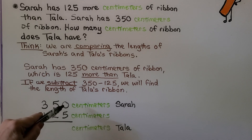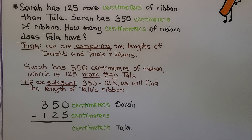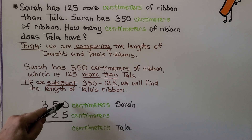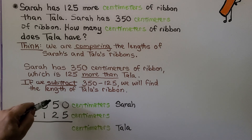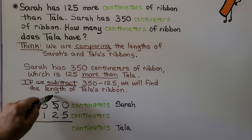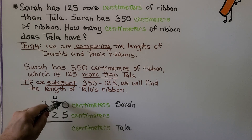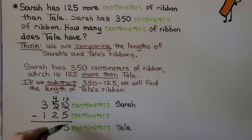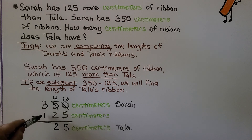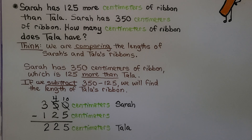We write 350 minus 125 and go to the ones place. We have zero ones and need to take 5 away, so we regroup from the tens place. The five tens becomes four tens, and the zero ones becomes ten ones. Ten minus five is five. Four tens minus two tens is two tens. Three hundreds minus one hundred is two hundred. Tala's ribbon is 225 centimeters long. We mark centimeters so we know what we're counting.